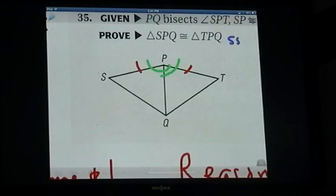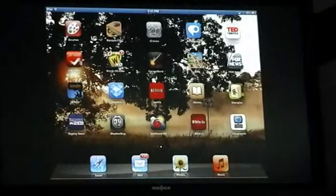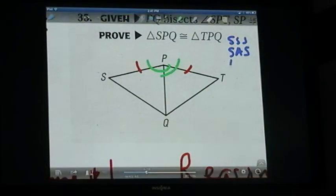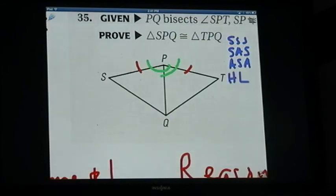We could choose side-side-side, side-angle-side, angle-hypotenuse leg, and angle-angle-side. Well, hypotenuse leg is out because there are no right angles here.